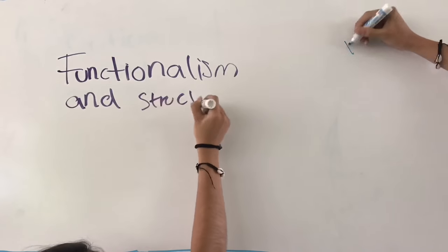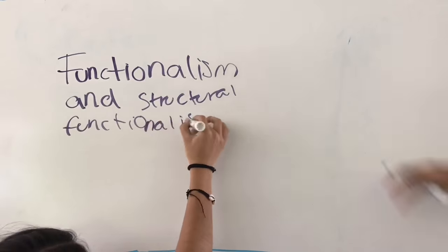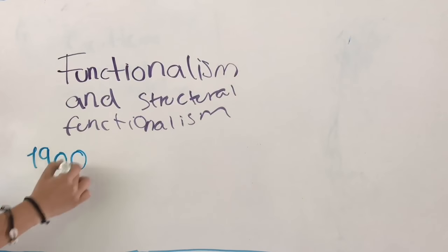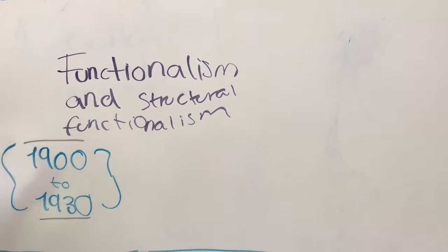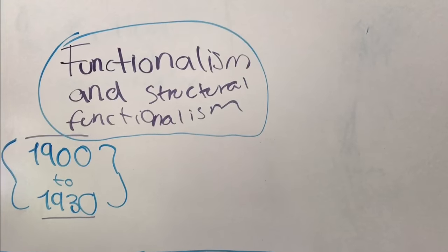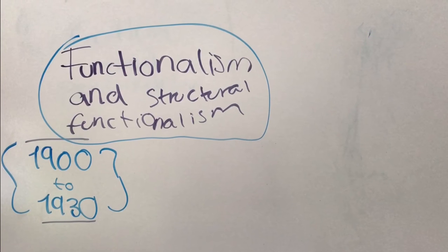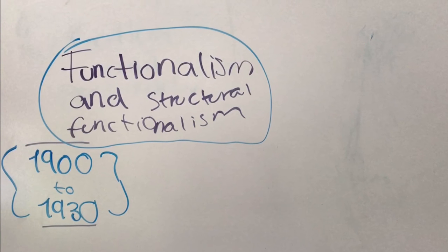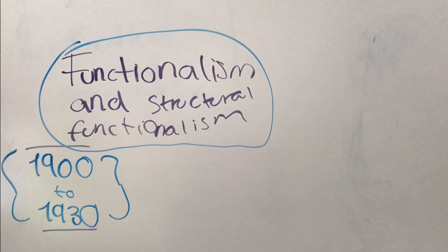It describes the role of the traditional institutions and cultures to understand their society and their origins. The main representatives are Bronislaw Malinowski from England and Radcliffe Brown from England too. It was from 1900 to 1930.